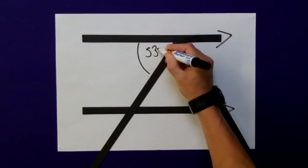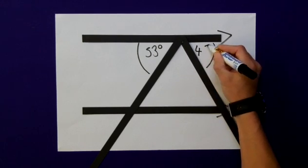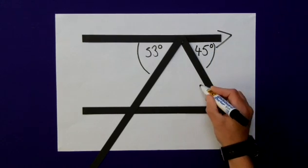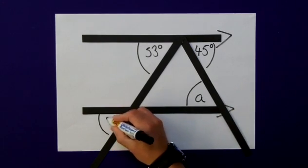From given information, this is 53 degrees. This is 45 degrees. We need to calculate angle A and also angle B.